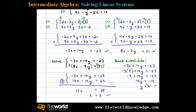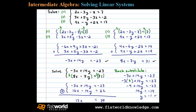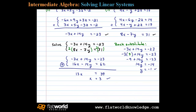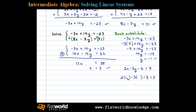Now we have y. All that's left is to back substitute into one of the original equations to find z — let's use the first equation. We'll substitute 3 in for x and negative 1 in for y, which gives us 6 plus 3 minus z equals 7, or 9 minus z equals 7.